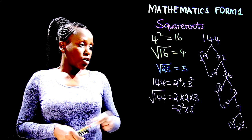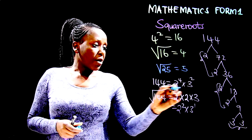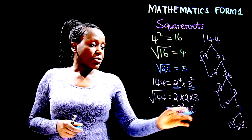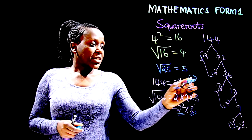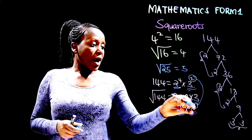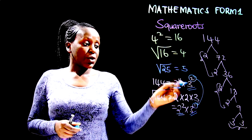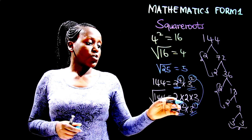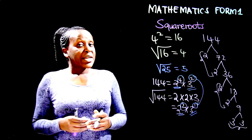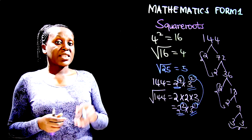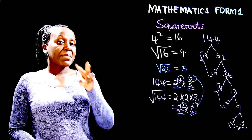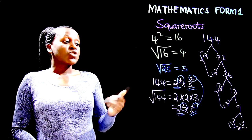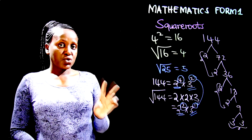We had 2 to the power 4, and the square root has 2 to the power 2. We had 3 to the power 2, and the square root has 3 to the power 1. To get from 2 to 1, we divide 2 by 2; to get from 4 to 2, we divide 4 by 2. So when obtaining the square root from a power, you divide the power by 2 — the opposite of squaring, where we multiply the power by 2.